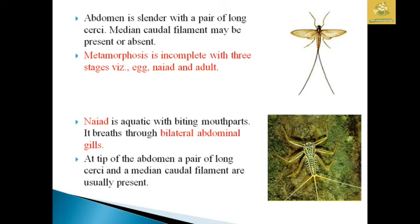Metamorphosis is incomplete with three life stages: egg, naiad, and adult. The naiad is aquatic with biting mouthparts and breathes through bilateral abdominal gills. At the tip of the abdomen there is a pair of long setaceous cerci and a median caudal filament.